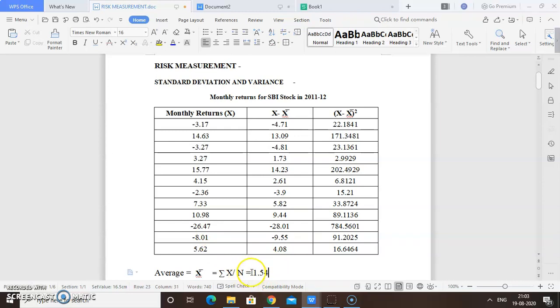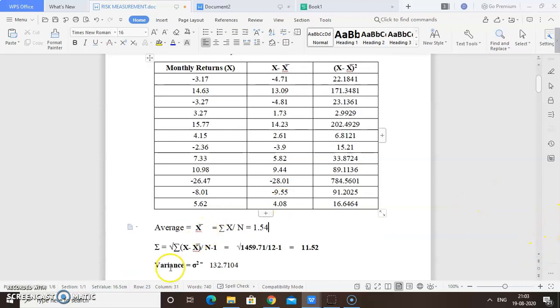Next, I need to find out X minus x-bar. We break this into X minus x-bar and X minus x-bar squared because we're going to use them in the formula. That's one of the main reasons we're taking the total value of all these. First, we find out X minus x-bar: -3.17 minus 1.14 gives -4.71. We do this for all values for every month and arrive at X minus x-bar.